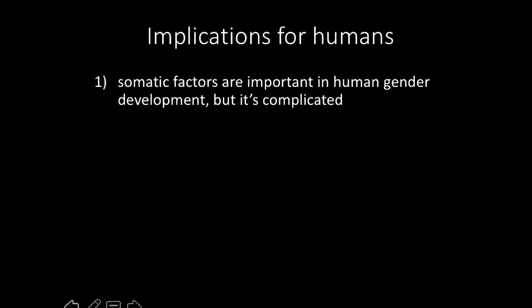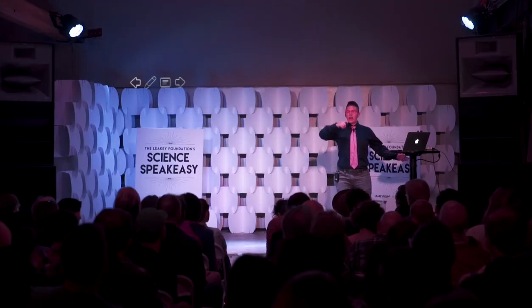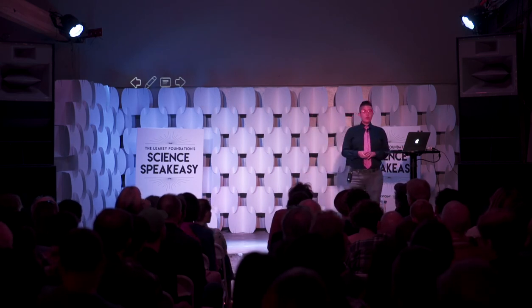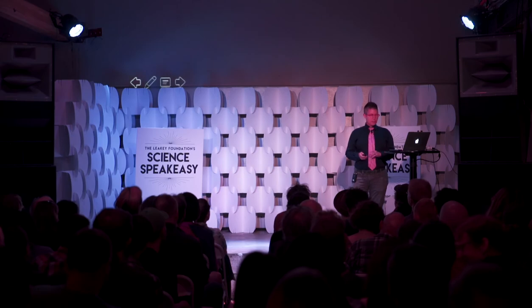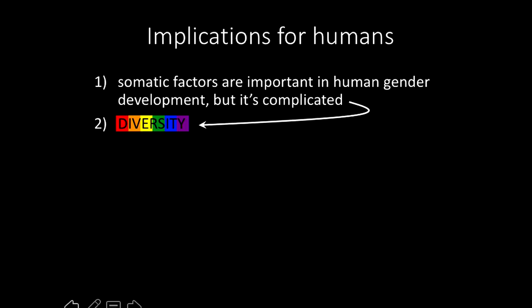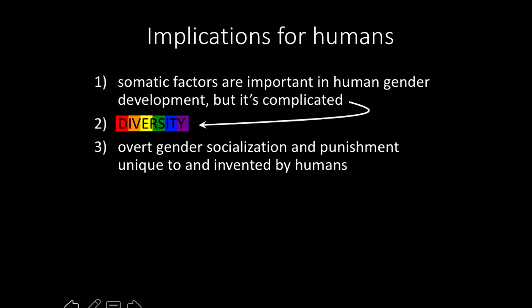What are the implications of these data for humans? First, somatic factors are important in gender development for humans, but it's really complicated. We should be really wary of simplistic explanations that try to connect prenatal hormone exposure with, say, performance on Wall Street 40 years later. There are a lot of developmental steps in between, and we know that developmental process is very complicated. Second, behavioral diversity should be an expectation of our complex developmental process, not a surprise. Third, there's no good evidence for overt gender socialization or punishment of gender-atypical behavior in non-human primates — that's just a human thing. Maybe we could stop that.